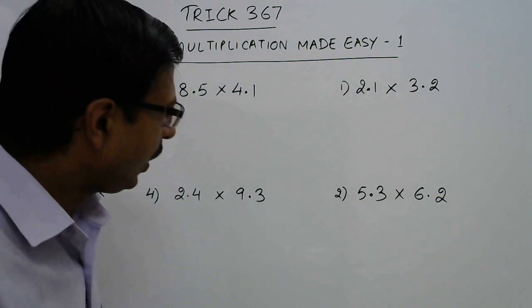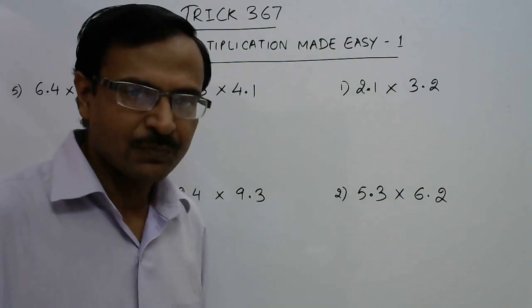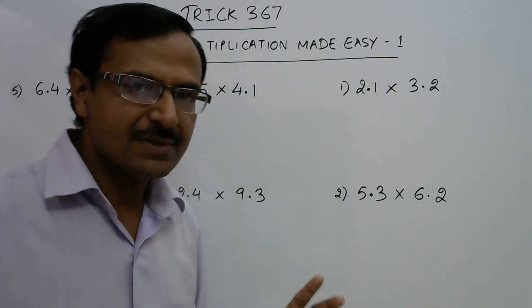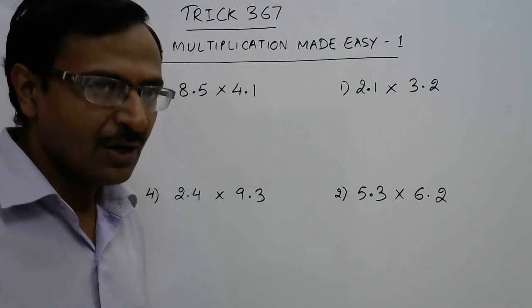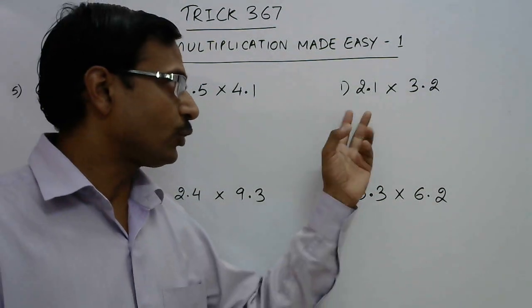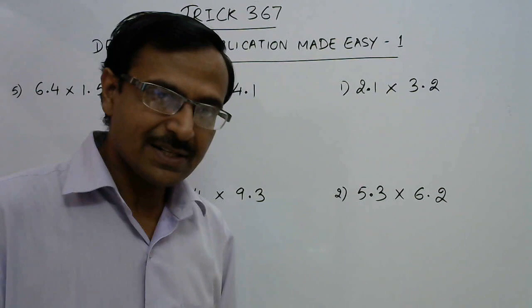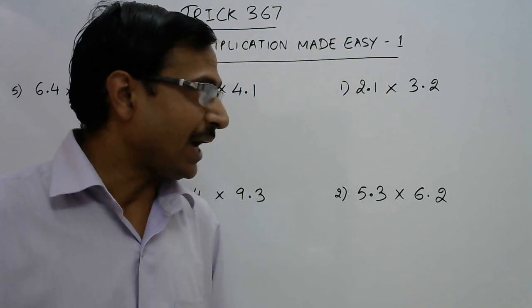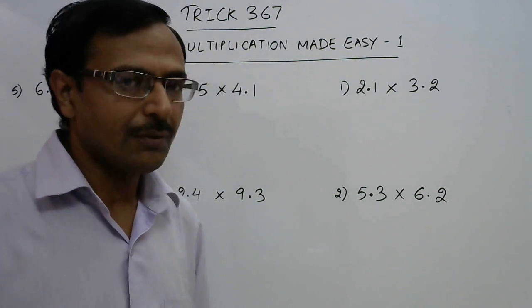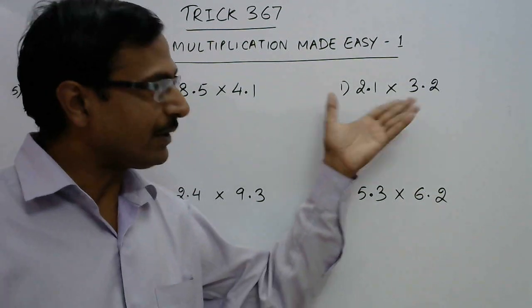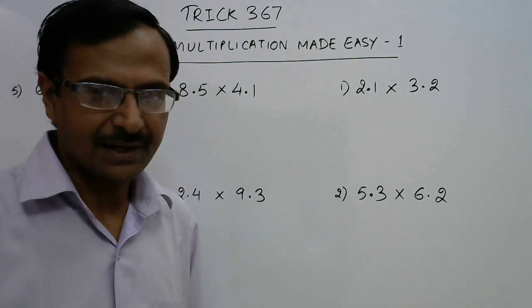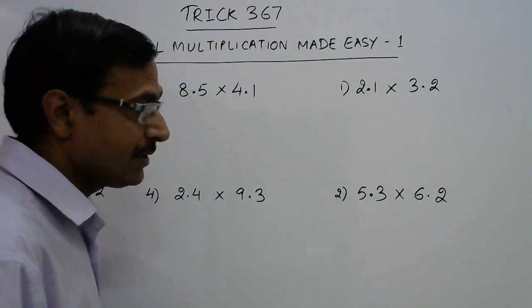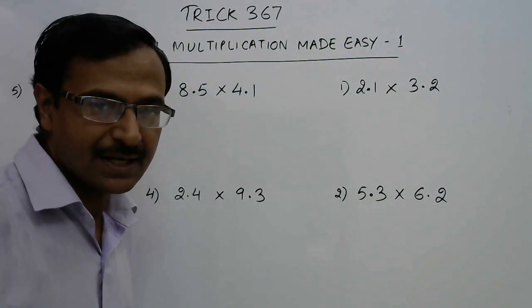Now let's understand how this takes place. I am going to use a very famous trick, the method of vertically and crosswise for finding the product of 2.1 and 3.2. That's a Vedic mathematics method and once you are able to solve 2.1, 21 into 32 I think the problem is as simple as that. Now let's try and solve the first one and understand how it goes.